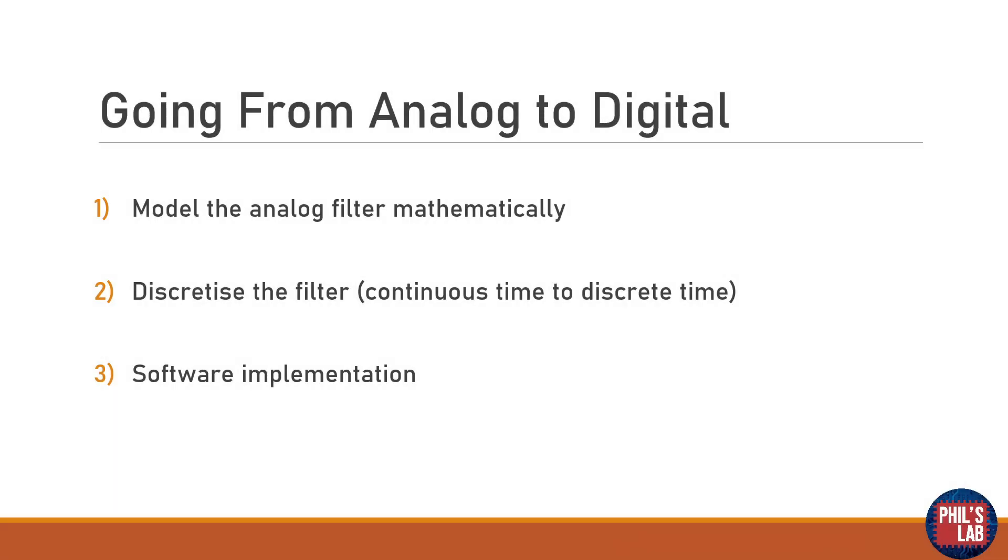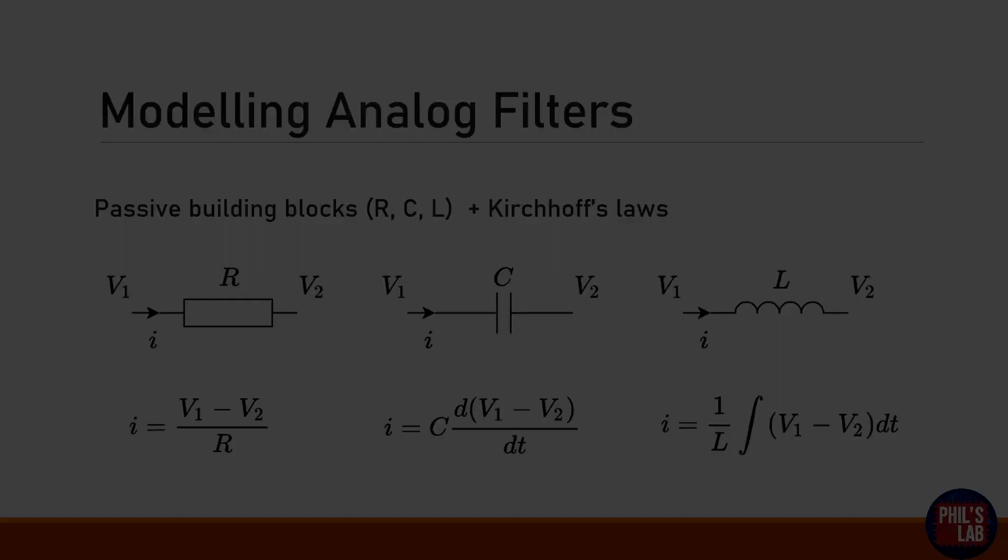Here are the three steps we need to do to go from an analog filter prototype to the digital domain. First of all we have to model the analog filter mathematically and that's typically done with differential equations. Then we need to discretize the filter, so we need to go from continuous time differential equations to discrete time difference equations. Then the third step is once we have these difference equations in discrete time, the software implementation is actually really straightforward and I'll show you how to do that soon.